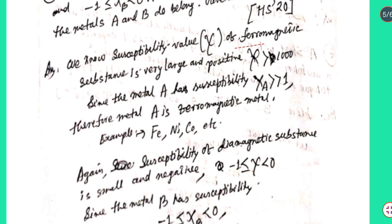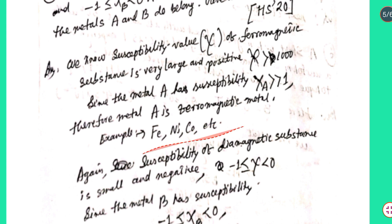Metal A is a ferromagnetic material. Since χA is very much greater than 1, metal A belongs to the class of ferromagnetic materials. Examples include iron, nickel, cobalt, etc.